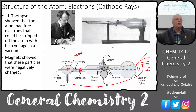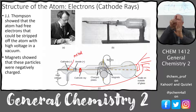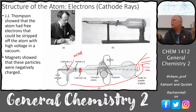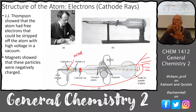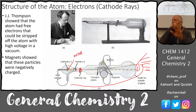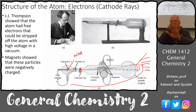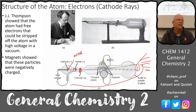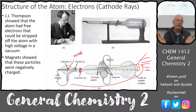CRT televisions used electron beams steered at phosphors, producing a black-and-white image. Then they added phosphors that emit red, green, and blue, and steered the beam precisely to hit each one. Every pixel had three phosphor areas — red, green, blue — and by picking which one to hit with electrons, we got color television.